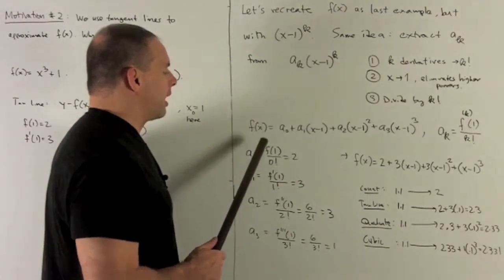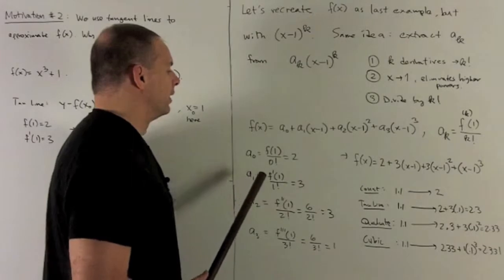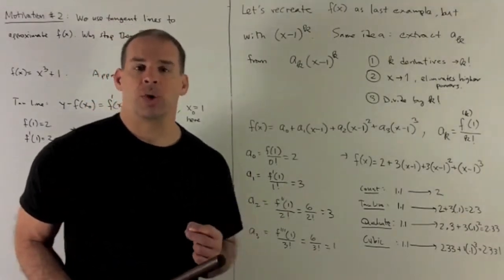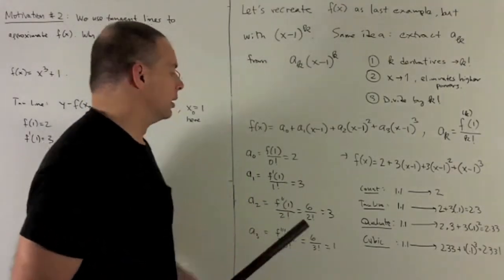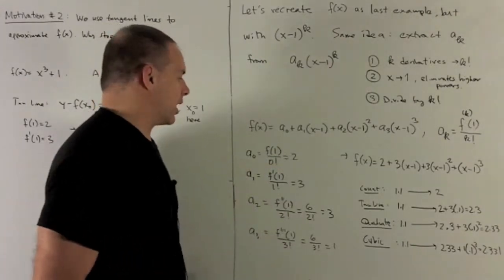So a₀ is going to be f(1). The 0th derivative of the function is just the function itself. Then we divide by 0 factorial. 0 factorial, by definition, is going to be equal to 1. So this is going to give me a 2, like we saw when we played with the tangent line.